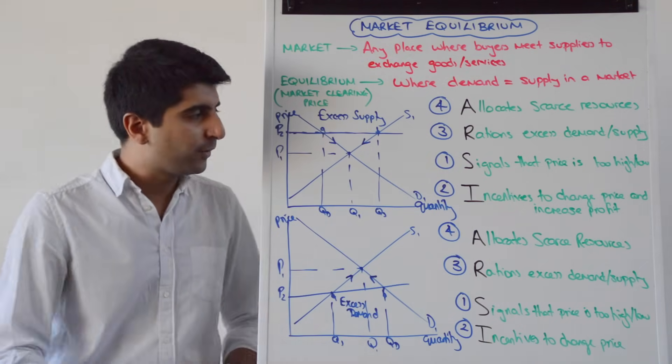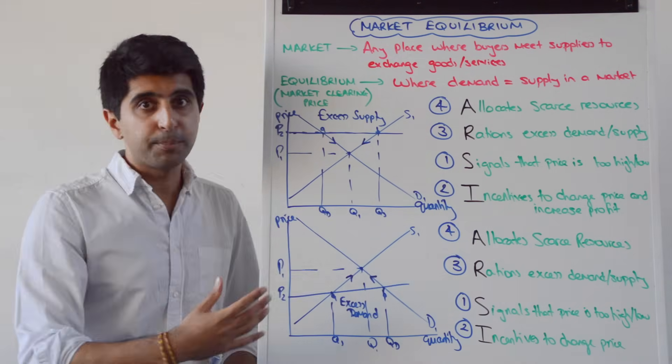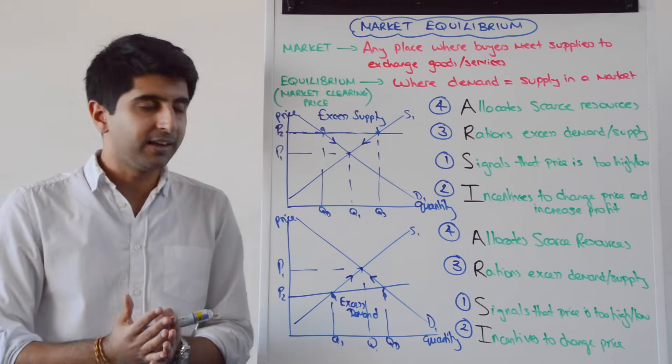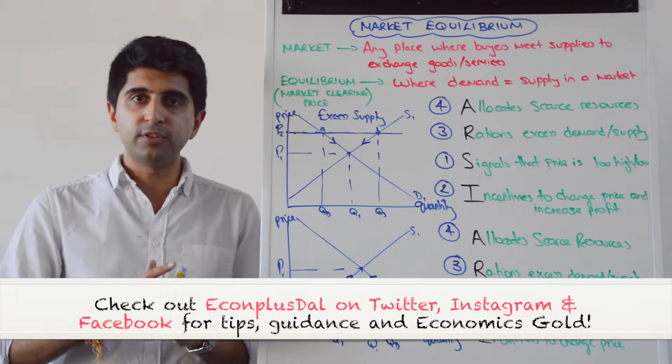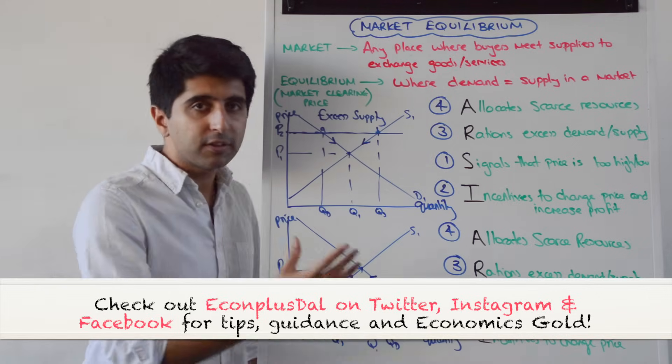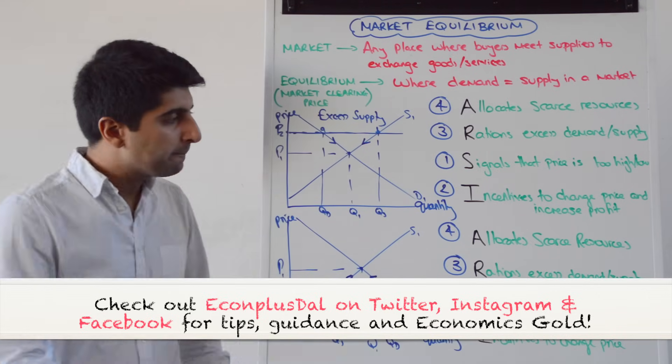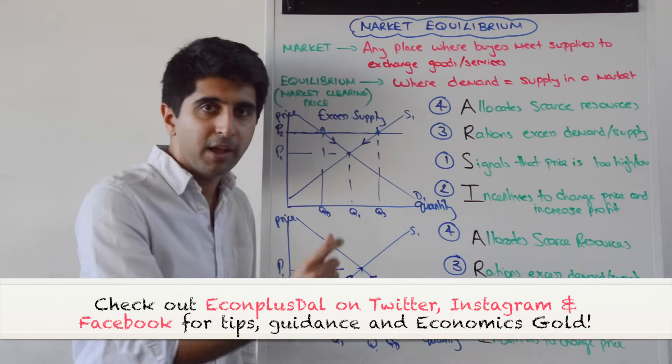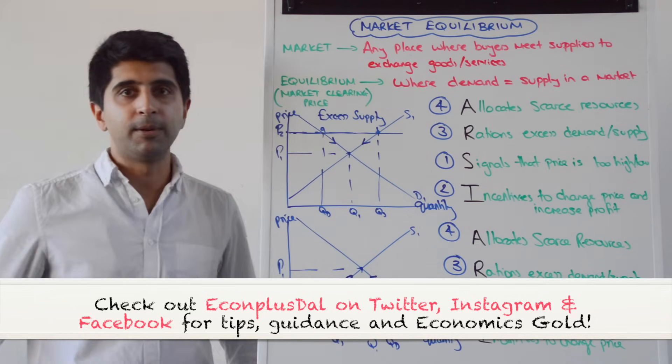So you understand how disequilibrium, how it looks, but also how it wouldn't last in a free market. The basic interaction between producers and consumers, the basic functions of the price mechanism would take it away, which will always leave us with a perfect allocation of scarce resources at equilibrium.